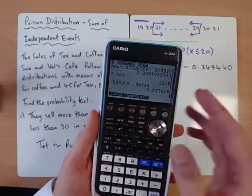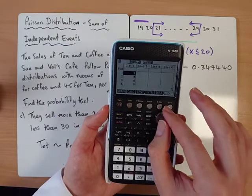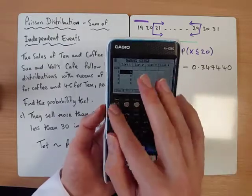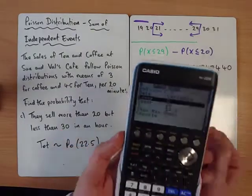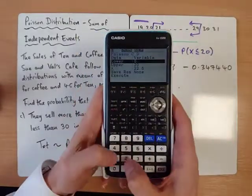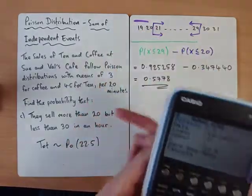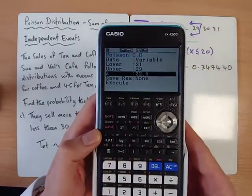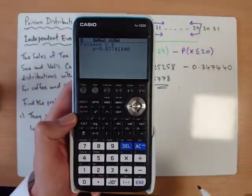Remember, the quick way of doing it on this calculator, though, that will not give us the method mark, but it will give us the answer. If we just go on to distribution Poisson cumulative, if we want more than 20, less than 30, lower would be 21, upper would be not 30, less than 30, so upper would be 29. And that just spits out the answer, 0.5770.